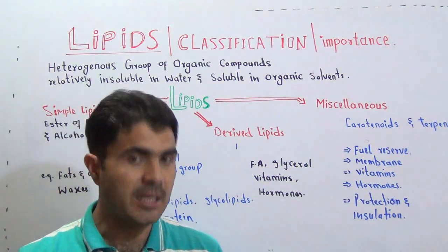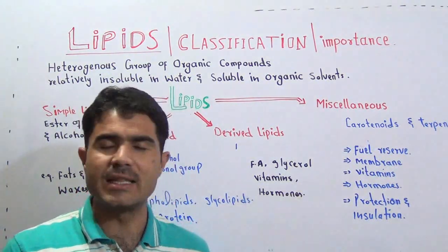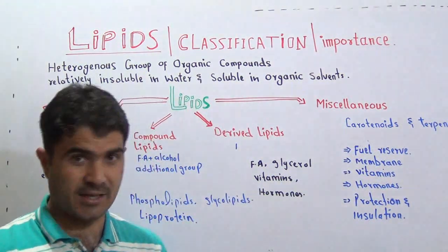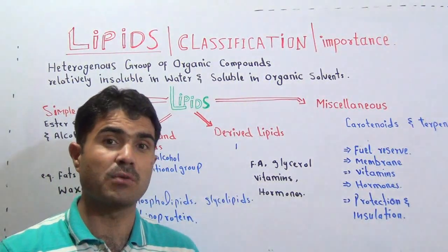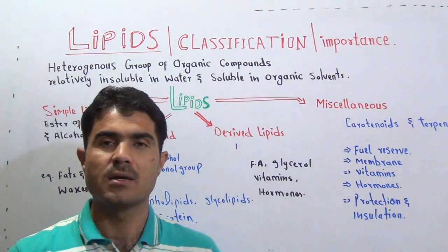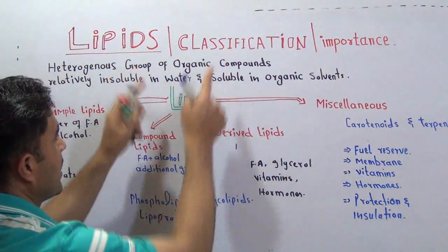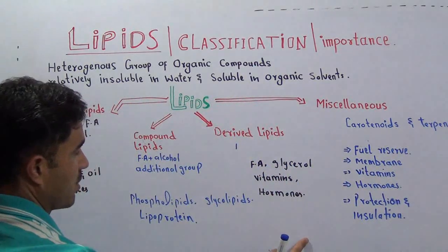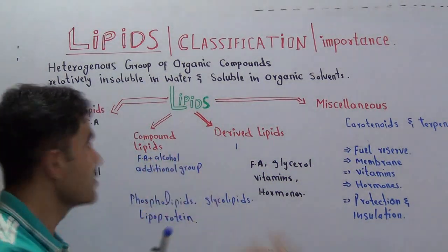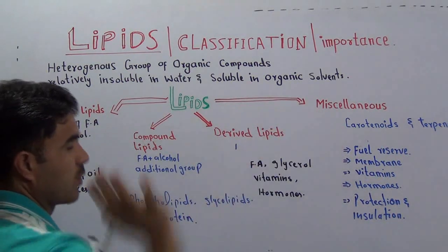So that was the simple definition of lipids. After the definition, we will come to the classification of lipids. The lipids are classified into four categories. The first one is called simple lipids, the second one is compound lipids, and then the third and fourth categories follow.